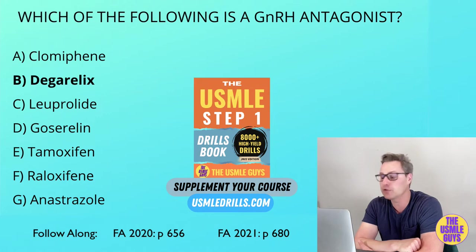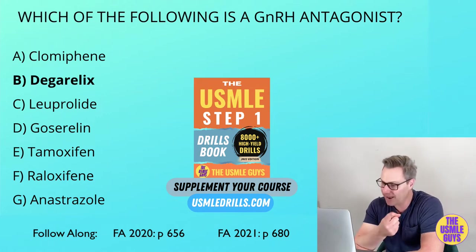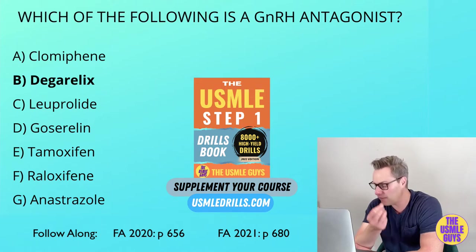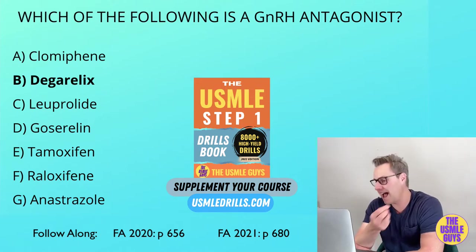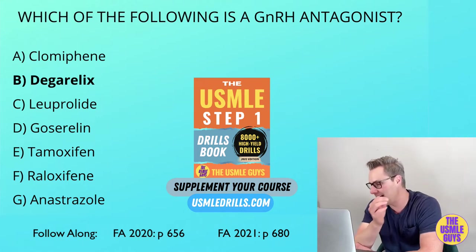Clomiphene is therefore useful in helping with fertility issues. Tamoxifen acts as an antagonist in the breast and as an agonist in the bone and uterus. Raloxifene acts as an antagonist at the breast and uterus and as an agonist at the bone.